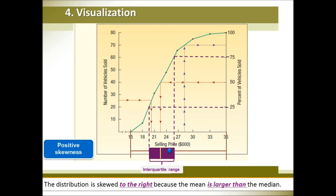The distance between the first quartile and the third quartile is your inter-quartile range. For example, 26 minus 20 equals 6. So $6,000 is your inter-quartile range. Don't forget the units.